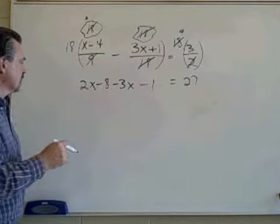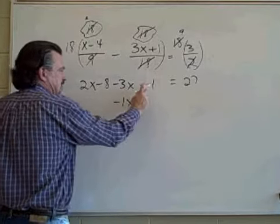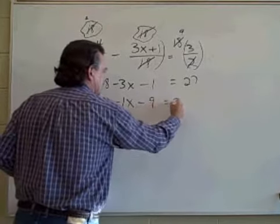Well, let's combine the like terms that are here. 2x minus 3x is negative 1x. Minus 8 minus 1, that's minus 9.